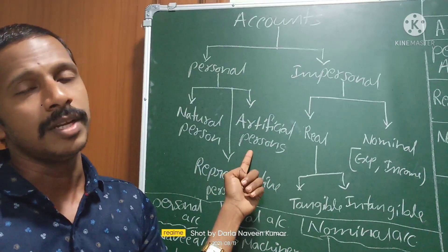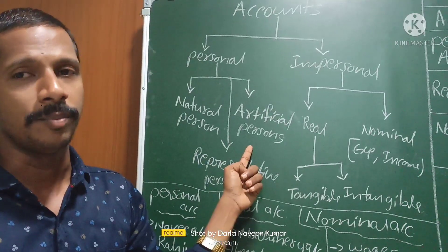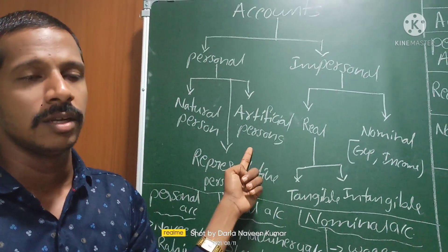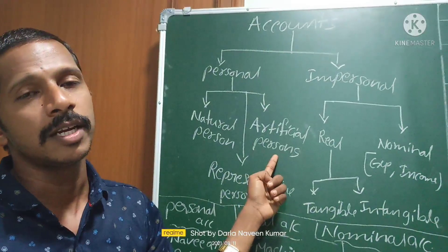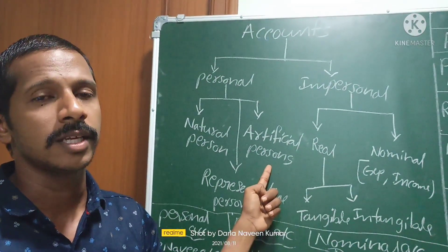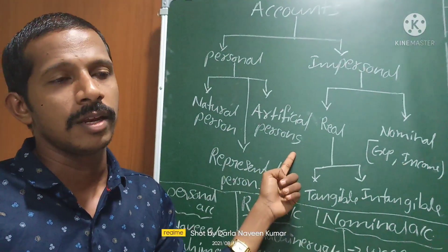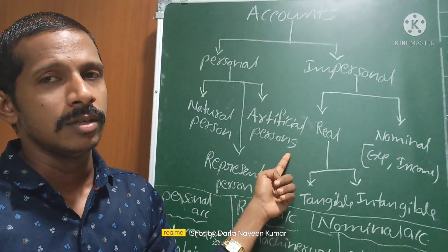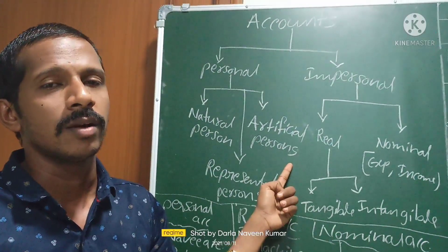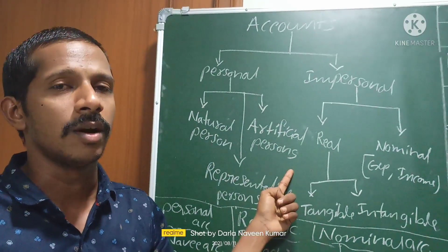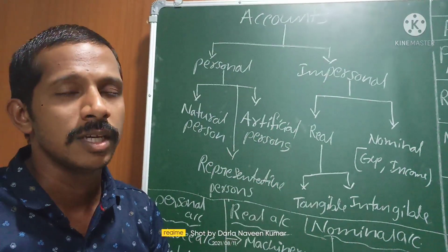Artificial persons means which are created by an act — according to the Companies Act, if any company is registered with a name, we call it an artificial person. A company is created by law, so we call it an artificial person. For example: SBI Bank account, Canara Bank account, Reliance account. Any company name is an artificial person — you can easily identify them.